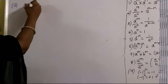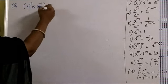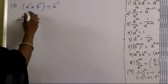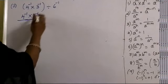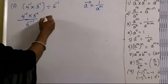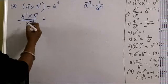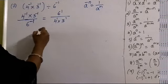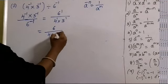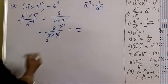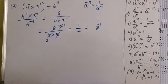Second one: (4^(-1) × 3^(-1)) ÷ 6^(-1). Using a^(-n) = 1/a^n: 4^(-1) and 3^(-1) go to the denominator, 6^(-1) comes to the numerator. So we get 6¹/(4¹ × 3¹) = 6/12. Cancelling gives 1/2 as the answer, which can also be written as 2^(-1).